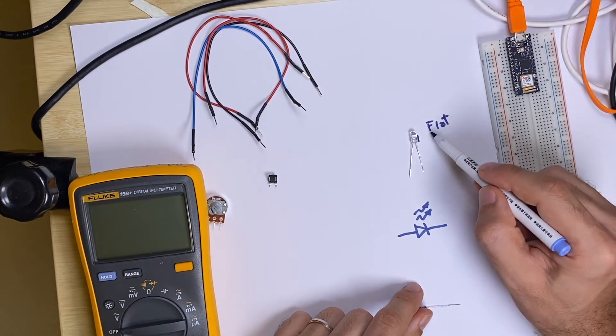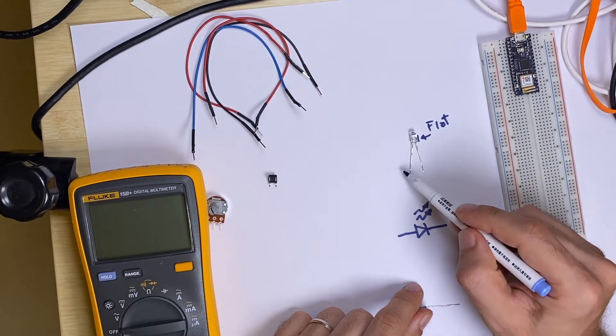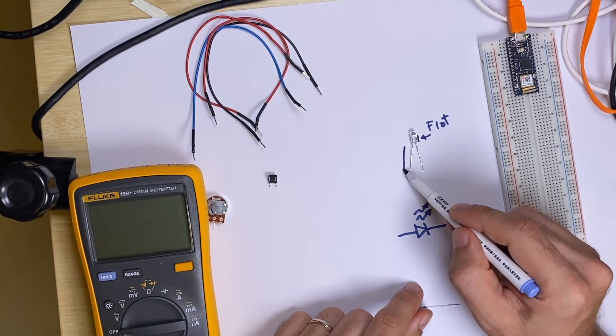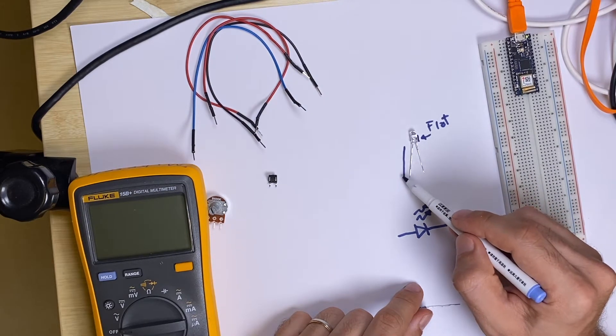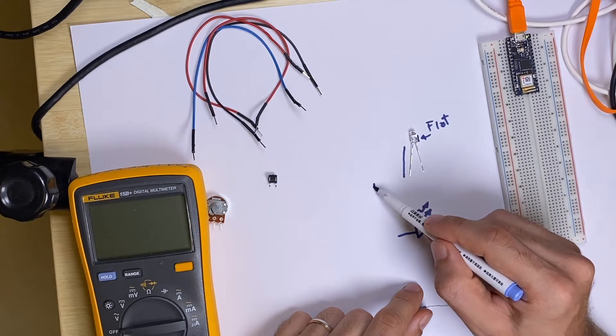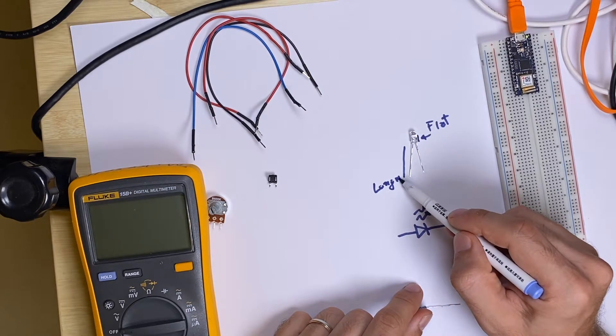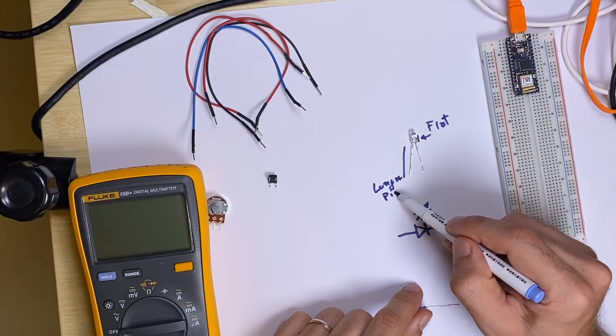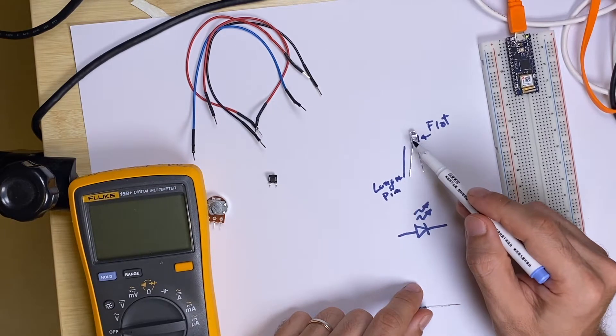That indicates the cathode, where the current flows out. One of the terminals is a little longer, and that longer leg is the anode, where you apply positive voltage for it to light up.